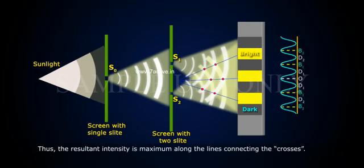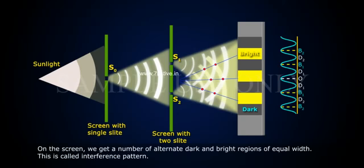Thus, the resultant intensity is maximum along the lines connecting the crosses. On the screen we get a number of alternate dark and bright regions of equal width. This is called interference pattern.